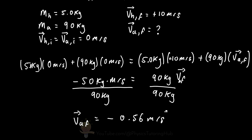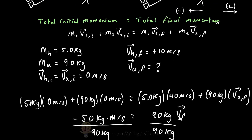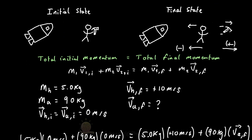This means that when we throw the hammer at 10 meters per second, due to the principle of conservation of momentum, the astronaut is propelled backwards at 0.56 meters per second.